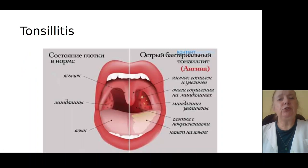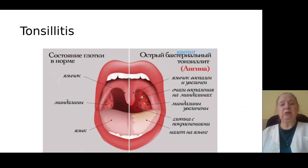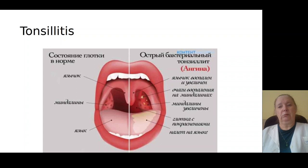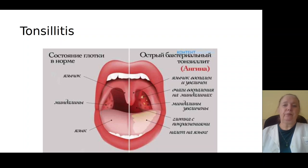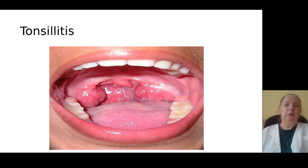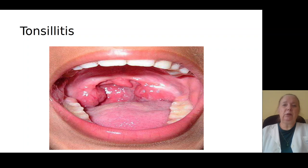Let's look at pictures with syndrome of tonsillitis. You see hyperplasia of tonsils, hyperemia of mucous membrane, and periuralant follicles in those patients.